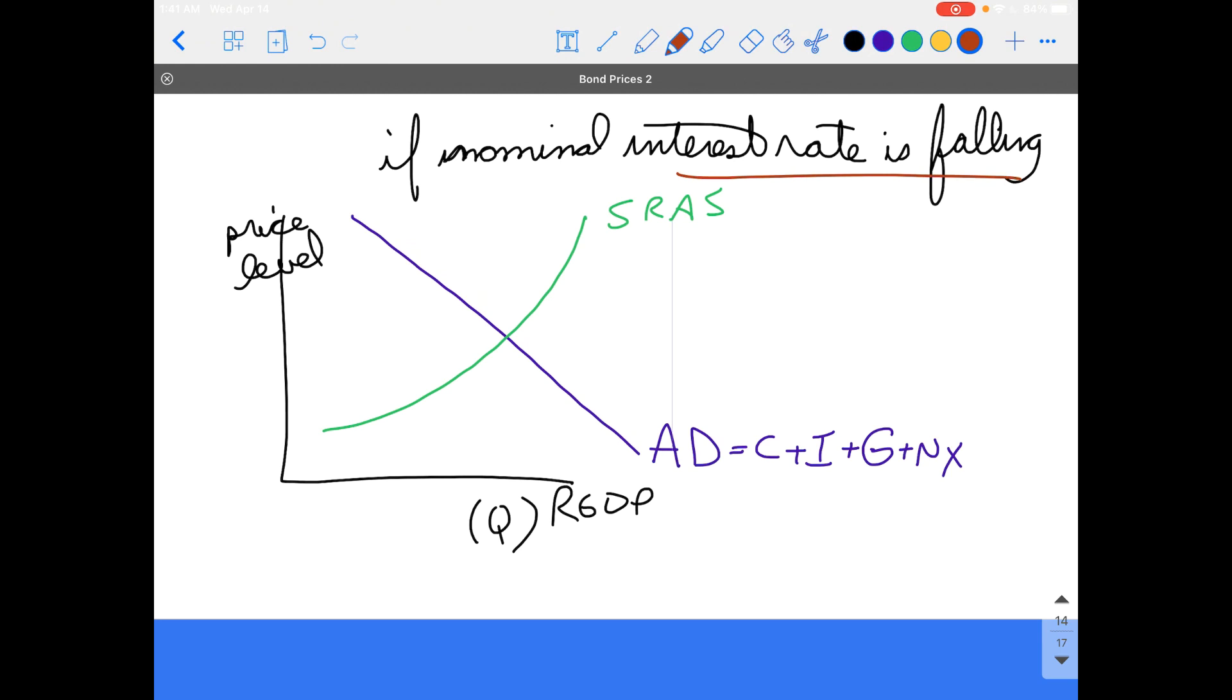If the interest rate is falling, what that would do is it actually would cause investment to rise. Investment, remember, consists of buildings, machines, inventory of businesses, people buying a house. All of those things are going to increase if the interest rate is falling. And if investment is rising, that's going to lead to the aggregate demand rising, which we are going to see right there.